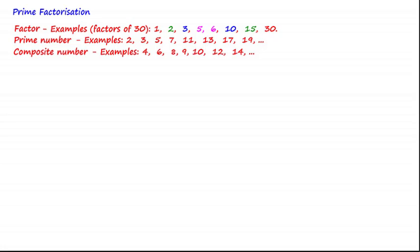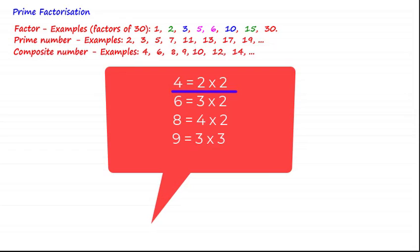And these are examples of composite numbers. 4 can be written as 2 times 2 for example. 6 can be written as 3 times 2. 8 can be written as 4 times 2. 9 can be written as 3 times 3 and so on.